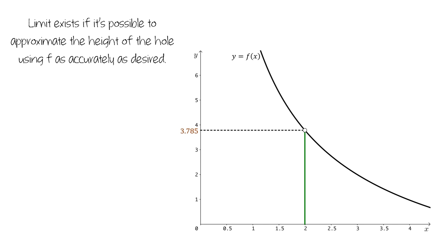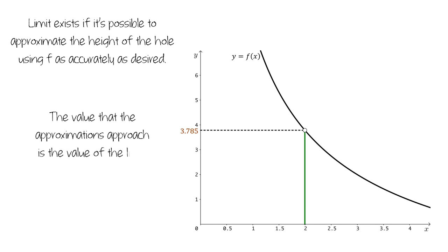And as we did this, the value that the approximations approach is the value of the limit. So in this case, the value of the limit to three decimal places was 3.785.